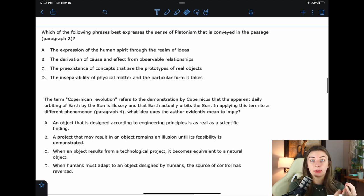Same thing with technology and humans. Technology's kind of revolving around humans at the beginning and humans are influencing it, but eventually humans are influenced by the object, complete reversal. A, an object that is designed according to engineering principles is as real as a scientific finding. I do not think that bringing up Copernicus, because that was a scientific finding, had anything to do with the author's whole I hate scientists thing. I think it was more just a demonstration of complete reversal of ideas in history. So I don't really like that. B, a project that may result in an object remains an illusion until its feasibility is demonstrated. I would argue that this is exactly the opposite of what the author says. The author's saying that the ideas behind a project are kind of the same thing as the project.